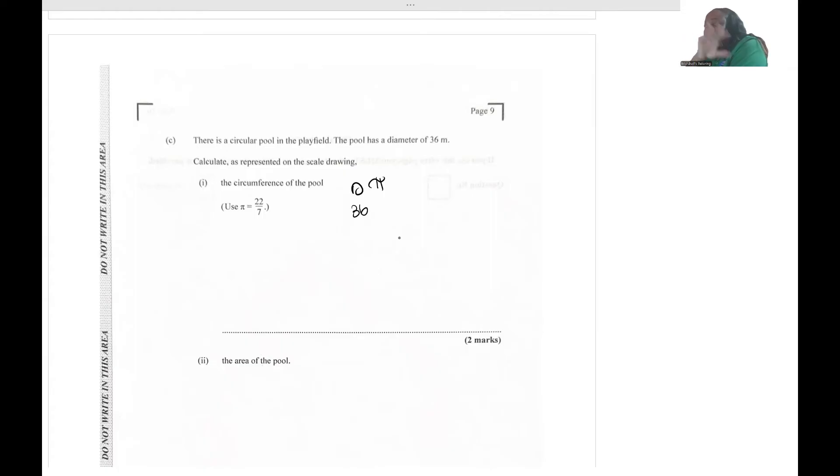The question told us to use pi as 22 over 7. So please, put 22 over 7 and do not put 3.14. So 36 multiplied by 22 over 7. We're putting this in the calculator - 36 by 22 divide by 7. They didn't tell us if they wanted us to round, so I'm just going to put this to two decimal places: 113.1 meters.